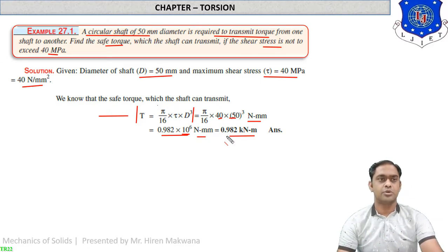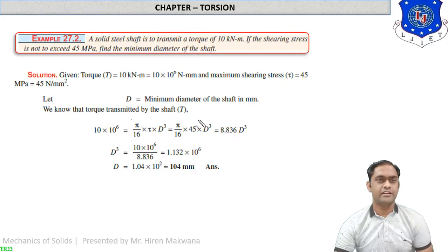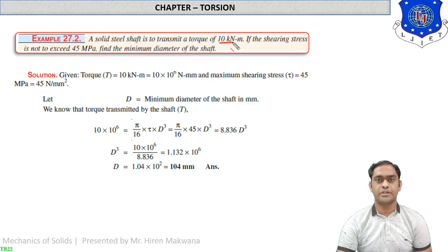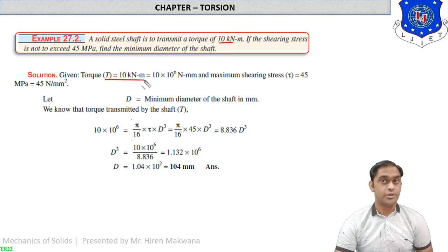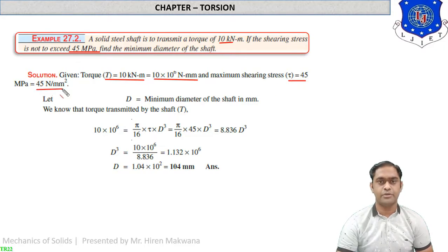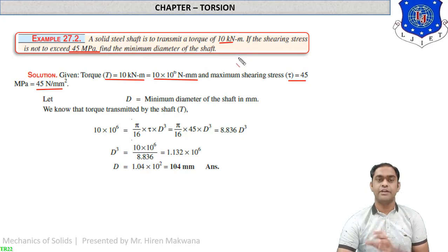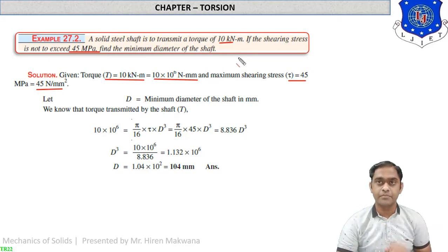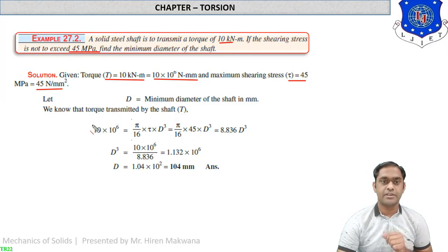Numerical 2: A solid steel shaft is to transmit a torque of 10 kN·m. Remember to convert it: T = 10 × 10⁶ N·mm. The shearing stress is not to exceed 45 MPa (i.e., 45 N/mm²). We have to find the minimum diameter of the shaft. The formula is again T = (π/16) × τ × D³.